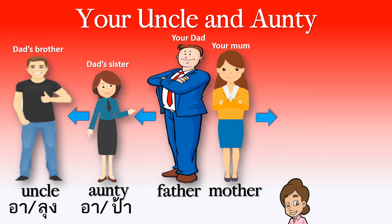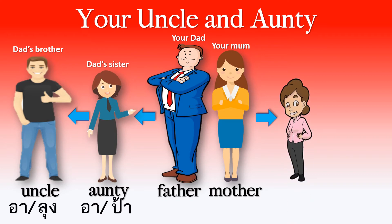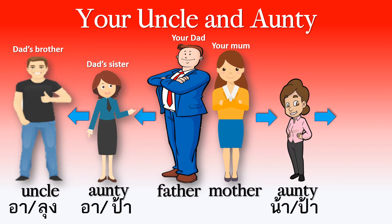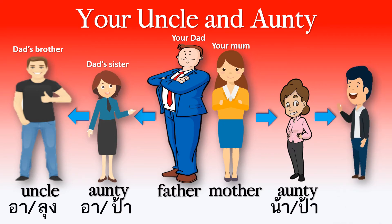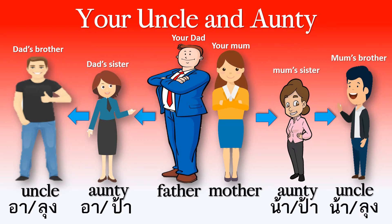Now what about your mum? Does your mum have a sister? She is your auntie. Does your mum have a brother? He is your uncle. So these are your mum's sister and your mum's brother — they are your auntie and uncle.